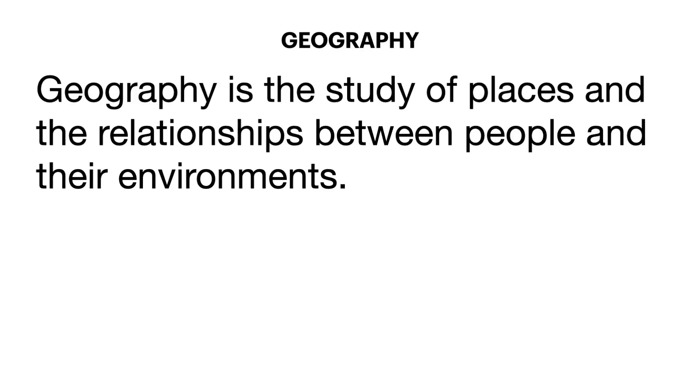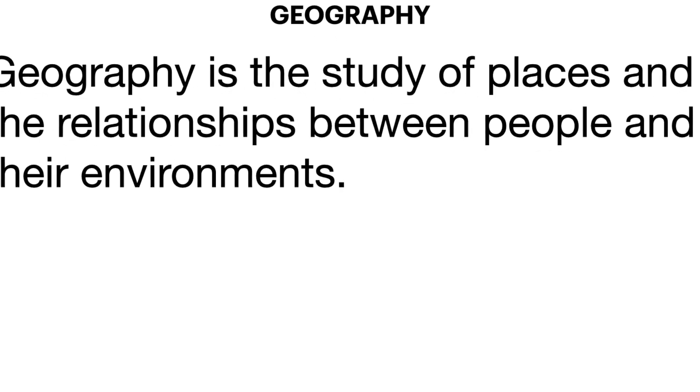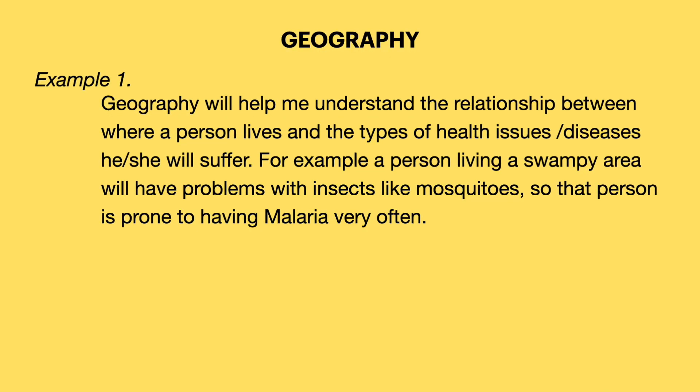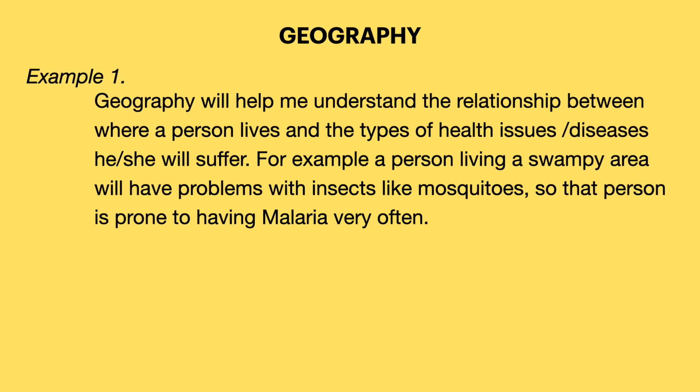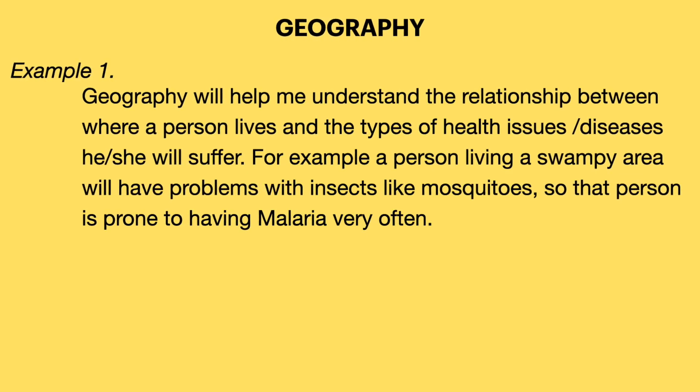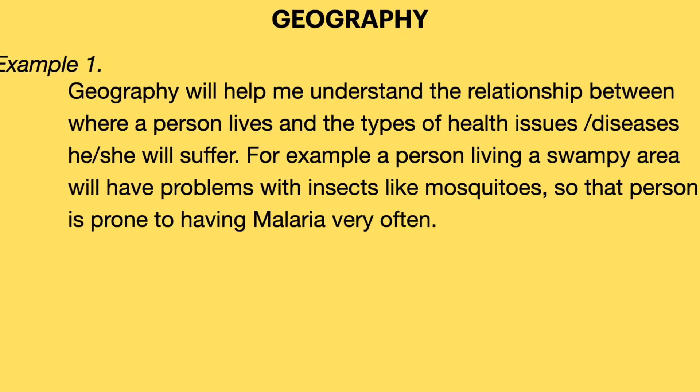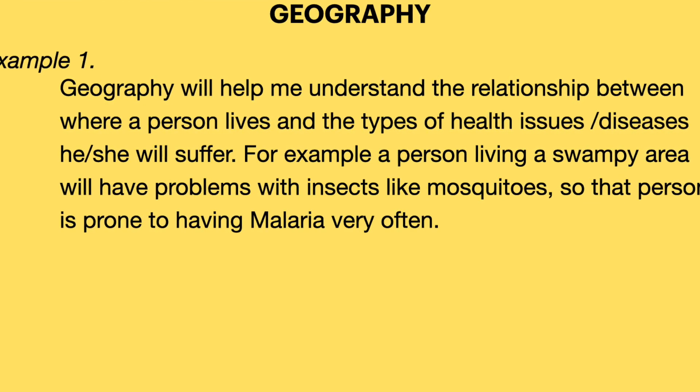The first one is geography. Geography is a study of places and people and the relationship they have with their environment. You can say geography will help me understand the relationship between where a person lives and the kind of health conditions the person can come with. For example, someone living in a swampy area will have problems with insects like mosquitoes and so will be prone to having malaria. Be prepared for follow-up questions — they may ask what kind of insects are common in swampy areas, and then what diseases mosquitoes cause.